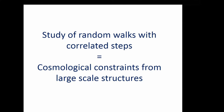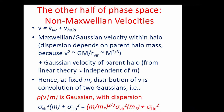Shifting gears: to set up redshift-space distortions, we need to discuss velocities. In the halo picture, we think of particles as having two contributions to their velocity: the virial motion inside their halo, and the bulk motion of the halo itself. The velocity of a particle is the virial velocity around its halo center, plus the halo's own velocity.